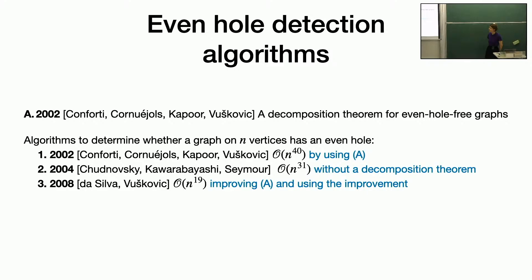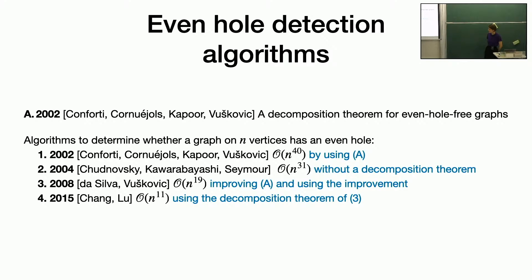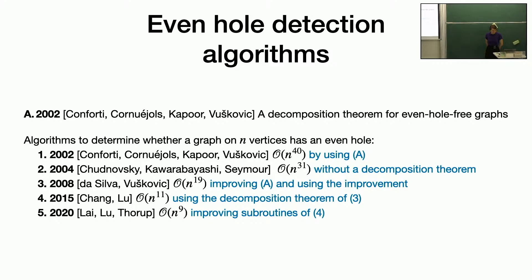All of the faster algorithms for even-hole-free graphs use the decomposition approach. In 2008, Da Silva and Vušković got an O(n^19) algorithm by getting a stronger decomposition theorem and then using that decomposition. Then in 2015, Cheng and Liu reduced the runtime further by using the same decomposition theorem but making the algorithm more clever. Very recently, Lai, Liu and Tharap improved a subroutine used in a lot of induced subgraph detection algorithms, and now they hold the record for all kinds of things including the even holes algorithm. The subroutine they improved is called the three-in-a-tree problem, which we also use.